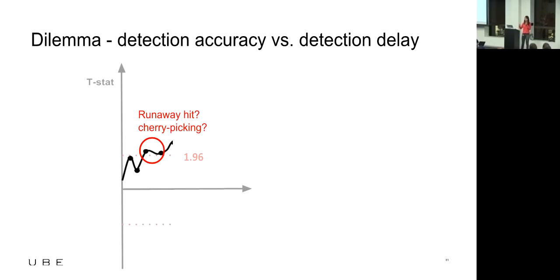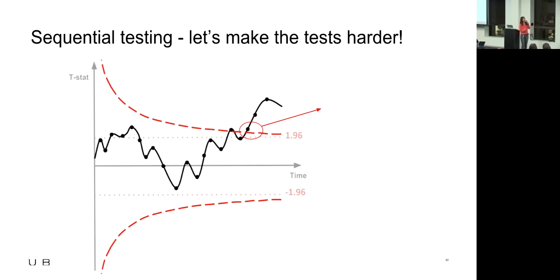So if you add them up, your overall type 1 error is going to go through the roof. That's why the experimentation platform team at Uber implemented sequential testing techniques that help us plan this allowance in a smarter way. Instead of giving a fixed 5% allowance every time, we take that 5% and figure out a way to distribute it over time. We give very little allowance at the early stage of experiments when we don't have enough data to make a reliable decision.